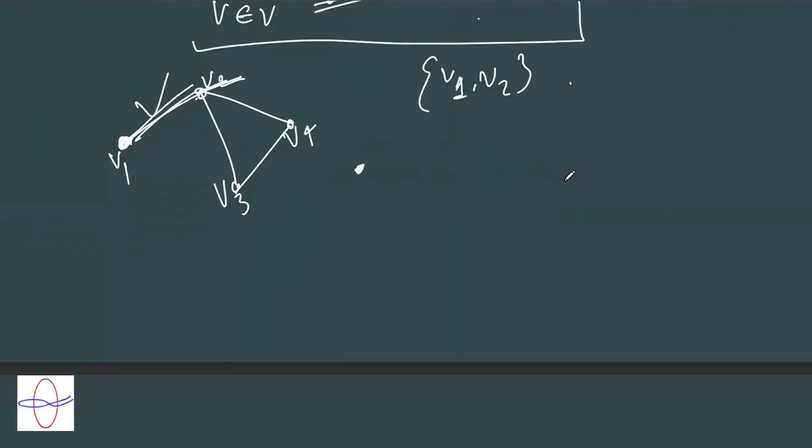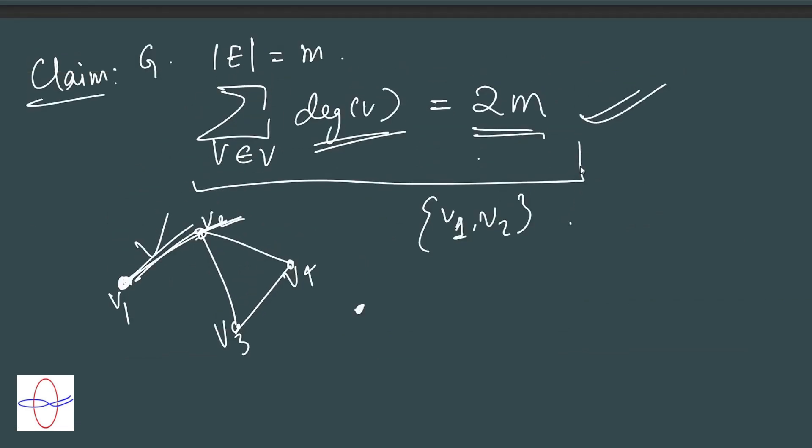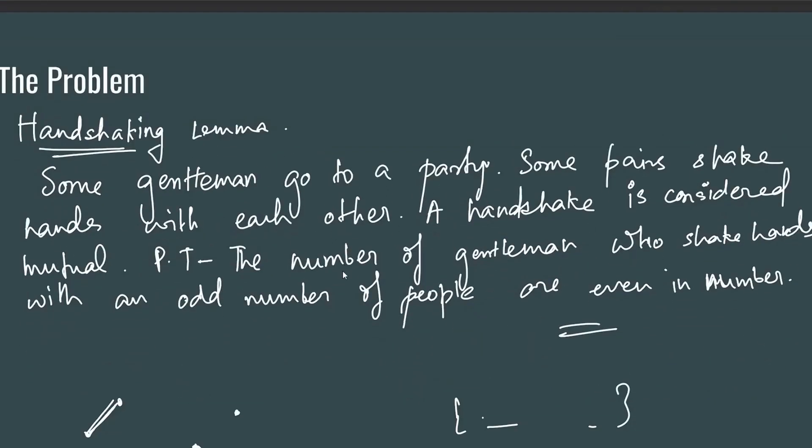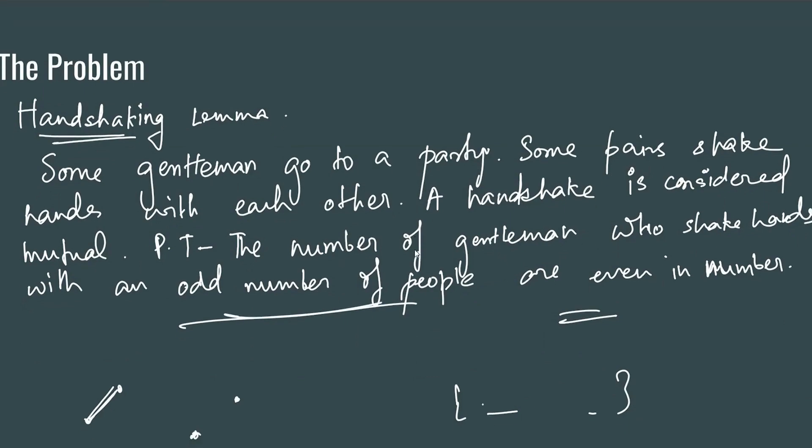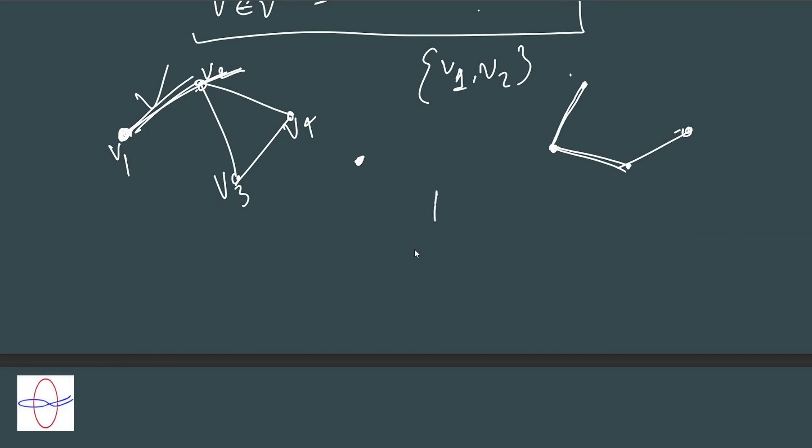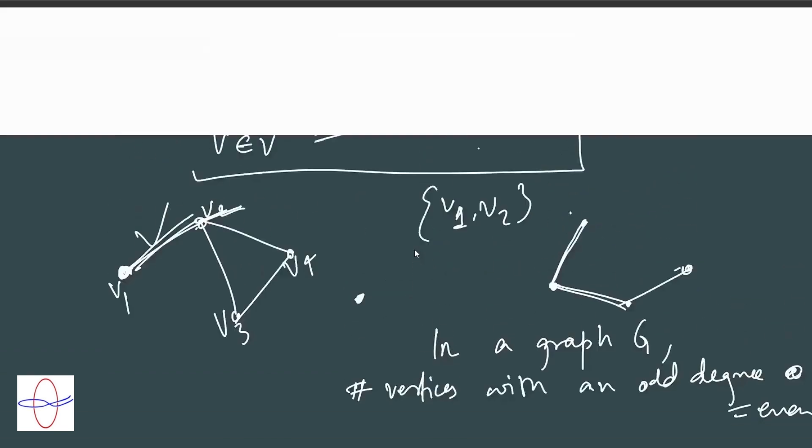The handshaking lemma is a direct corollary of this. Note how in the setup we created for the handshaking lemma, if we write the gentlemen as vertices and connect two vertices if the gentlemen shook hands, then suddenly this becomes a graph theoretic setup. The number of gentlemen who shake hands with an odd number of people - the number of vertices in this graph with an odd degree. So what the question is actually asking is that in a graph G, we are completely abandoning gentlemen and handshakes - the number of vertices with an odd degree are even. And this is immediately true.